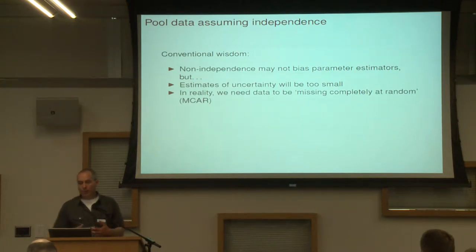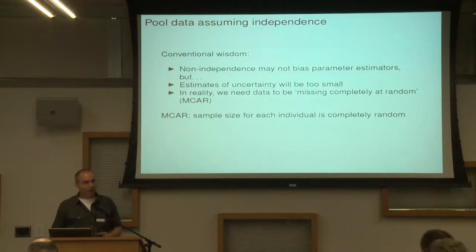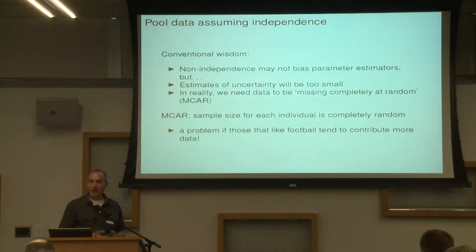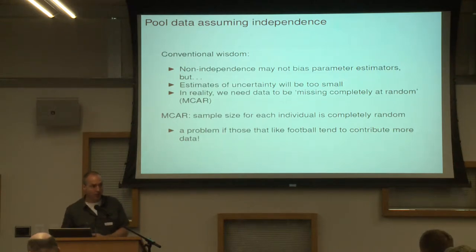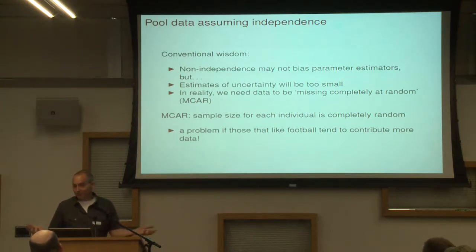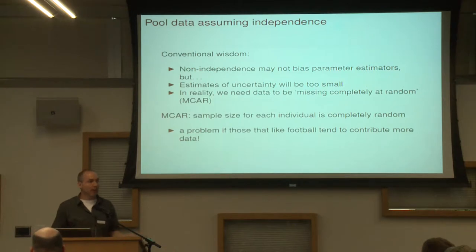In reality, there's an assumption about missing data — it should be missing completely at random. If the sample size is completely at random, that wouldn't be a problem. But if people that really like football contribute more data, then you're going to be weighting your information towards those individuals that contribute a lot of data, and those individuals are going to be different in a way that matters. One thing you could do is potentially subsample your data so you have equal amounts for each individual.